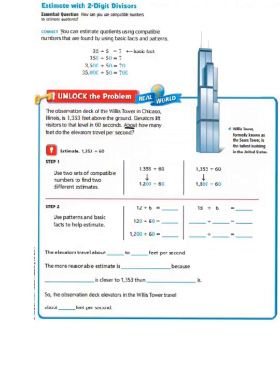Let's take a look at the question that we need to answer. It says, about how many feet do the elevators travel per second? Well, if you see that our question contains a very important keyword, about. About means to either estimate or round. And in order to find that, we have to use our basic facts.